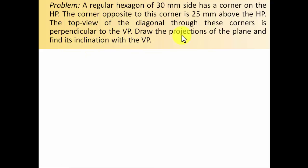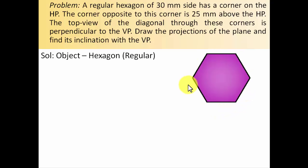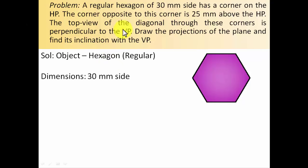There are quite a lot of conditions in this problem, so let's sort them out one by one. There is this hexagon in front of us — a 30mm side hexagon. All these sides are 30mm each and there is this corner on the HP.